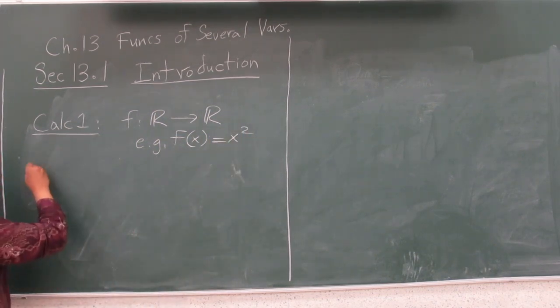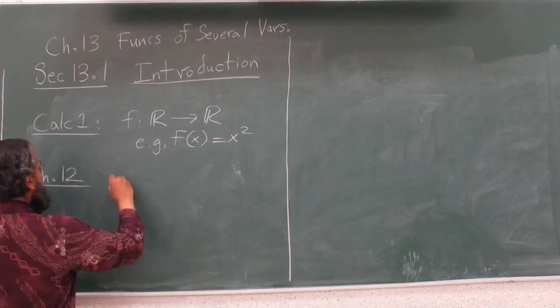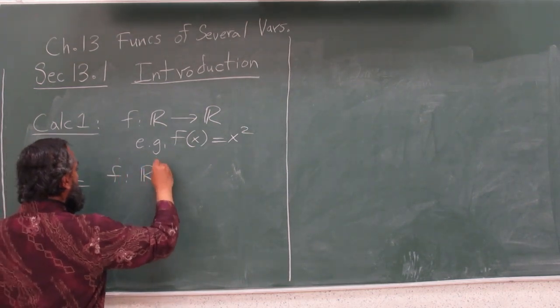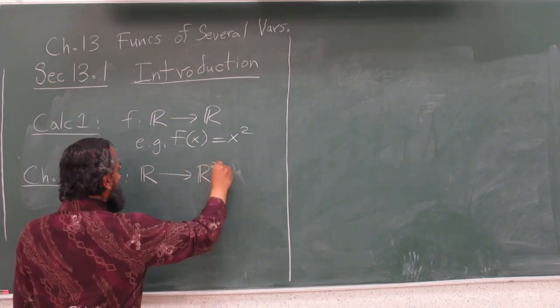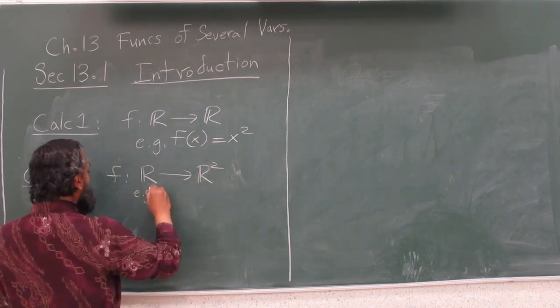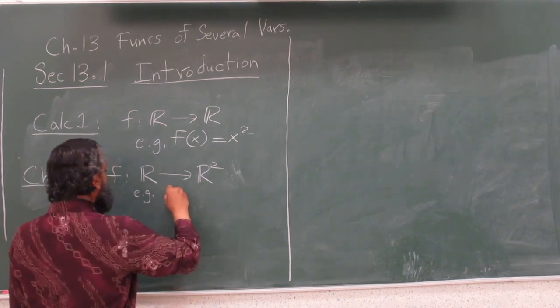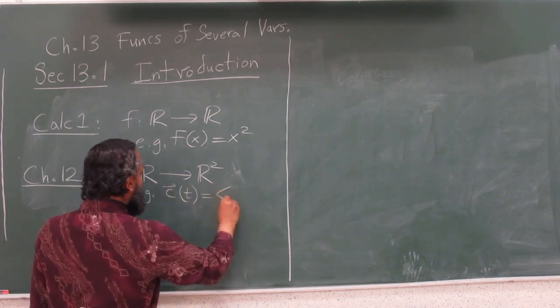Then in Chapter 12 of this class, we did functions from R to R². An example would be the parameterization of a circle. We said this is a vector-valued function because it outputs a vector: cosine t, sine t - one input, two outputs or two-dimensional output.